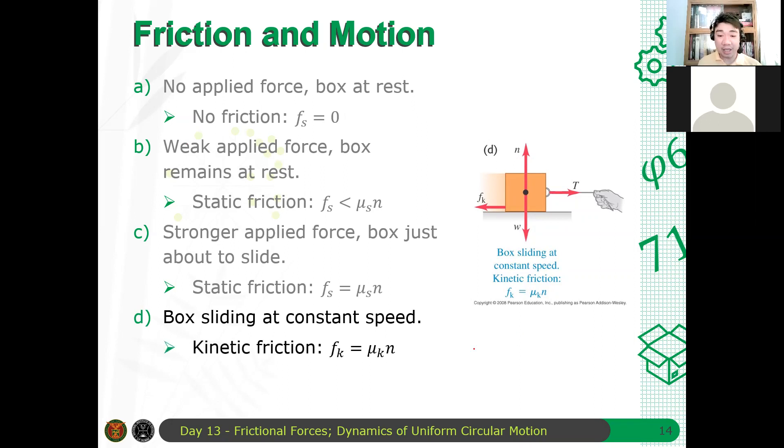Hence, we expect here, in general, mu s is always greater than mu k. Because the force needed to move an object is larger compared to the force needed to continue the motion of that object. Hence, mu s here, the coefficient of static friction, is greater than mu k, the coefficient of kinetic friction.